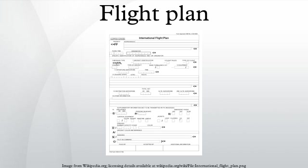T routes are low altitude RNAV-only routes which may or may not utilize VOR nav-aids. The high altitude airways in the U.S. have names that start with the letter J and are called jet routes, or Q for Q routes. Q routes in the U.S. are RNAV-only high altitude airways, whereas J routes use VOR nav-aids the same way V routes do. J and Q routes run from 18,000 feet to 45,000 feet. The altitude separating the low and high airway structures varies from country to country.